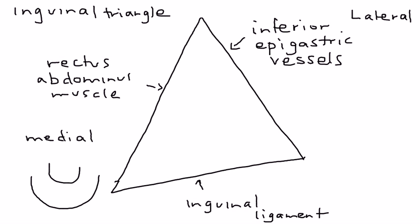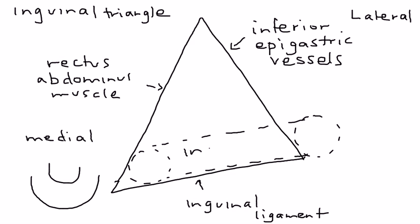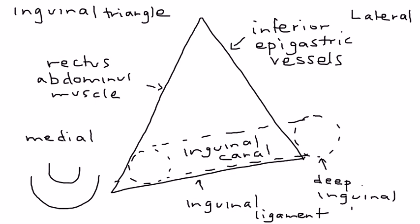I'll draw two circles — one on each side — with a tube running through them, and this is known as the inguinal canal. The first circle represents the entrance to the inguinal canal and is called the deep inguinal ring. The other circle is known as the superficial inguinal ring.